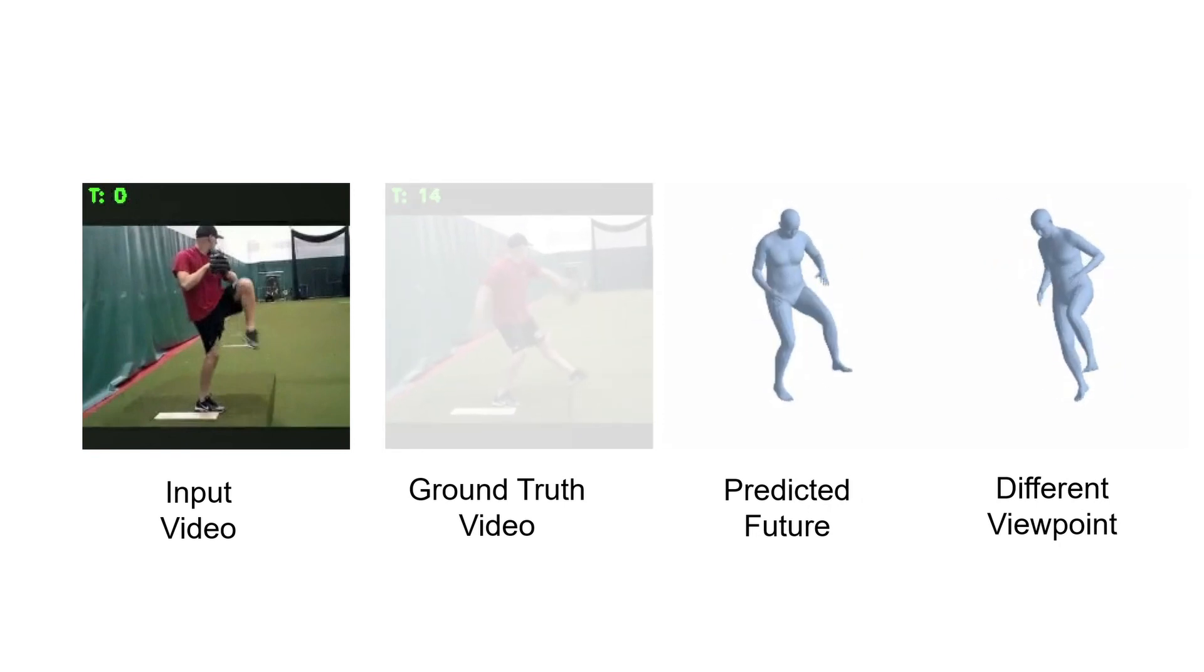To do this, we propose a neural autoregressive prediction model on the latent representation of 3D human motion encoded from the video. This allows seamless transitioning between conditioning on the past image frames and conditioning on previously generated future predictions.